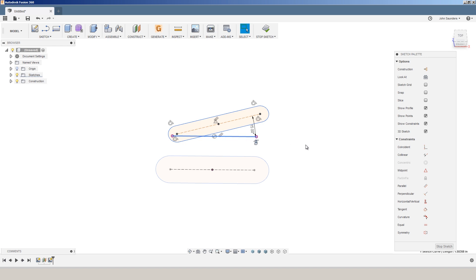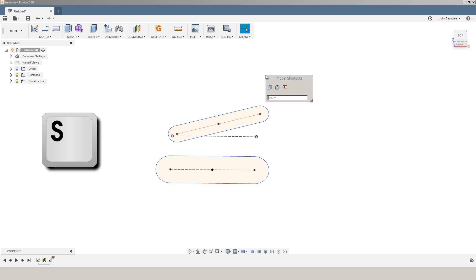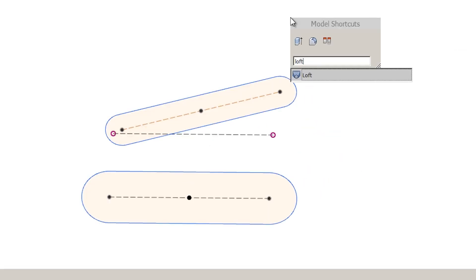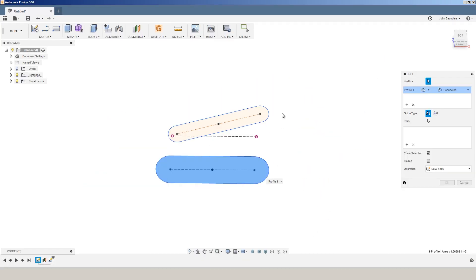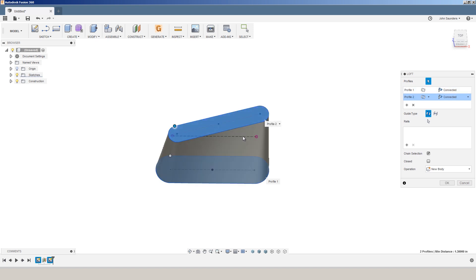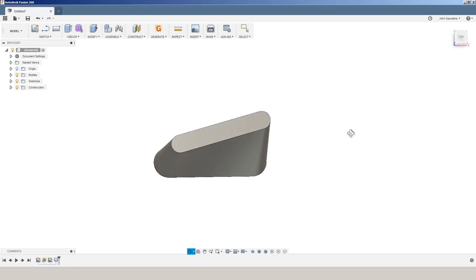Edit that sketch. Click the line. Hit X. That'll turn it into a construction geometry. Makes it easier for the next step. S is your keyboard shortcut. L-O-F-T. We're going to loft this profile up to this profile. By turning that line into a construction line, it means we can easily select the full profile of our part. And there we've got our sort of very pseudo turbo fan blade.